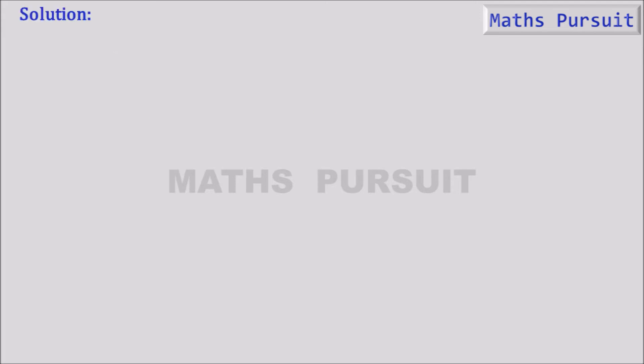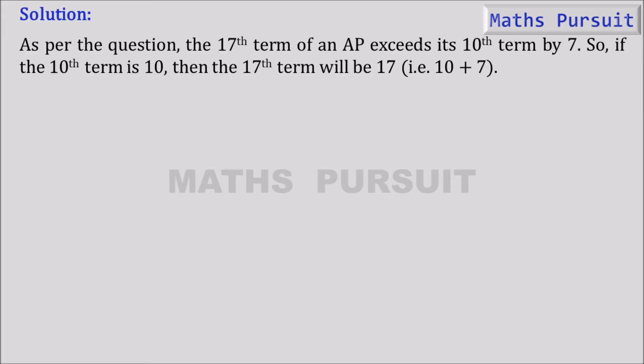Now moving on to the solution. As per the question, the 17th term of an AP exceeds its 10th term by 7. So if the 10th term is 10, then the 17th term will be 17, that is 10 plus 7. This is what as per the question.